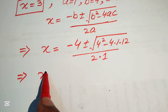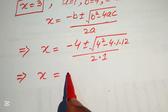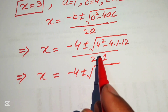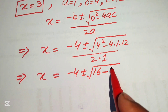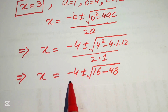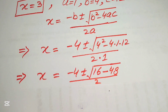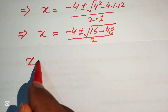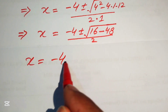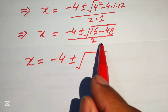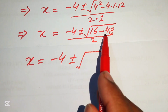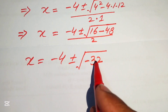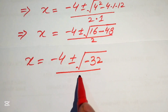This simplifies to x equals negative 4 plus or minus square root of 16 minus 48, divided by 2. Since 16 minus 48 equals negative 32, we get x equals negative 4 plus or minus square root of negative 32, divided by 2.